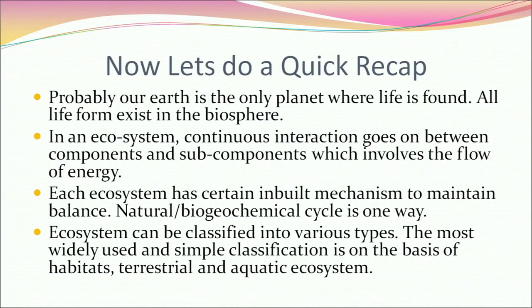Quick recap: Earth is probably the only planet where life is found. All life forms exist in the biosphere. In an ecosystem, continuous interaction goes on between components and subcomponents involving the flow of energy, and each ecosystem has certain inbuilt mechanisms to maintain balance — natural biogeochemical cycles being one way. Ecosystems can be classified into various types; the most widely used classification is on the basis of habitats — terrestrial and aquatic ecosystems. Thank you learners for listening patiently. Hope the session was fruitful. Good luck to you all.